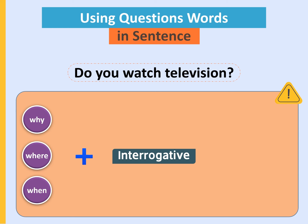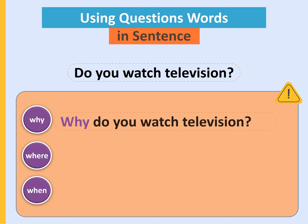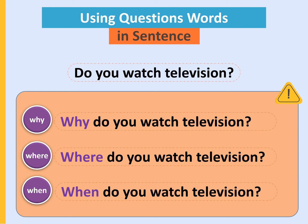إذن انطلاقاً من جملة you watch television، يمكن صياغة ثلاثة أسئلة: why do you watch television (لماذا تشاهد التلفاز)، where do you watch television (أين تشاهد التلفاز)، when do you watch television (متى تشاهد التلفاز). نحافظ على نفس صيغة السؤال الـ interrogative، والاختلاف يكون فقط في الـ question word. هذه هي القاعدة العامة، لكن هناك بعض الـ exceptions التي سنتحدث عنها.